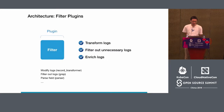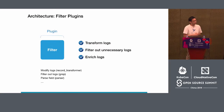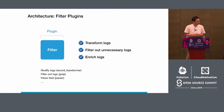Next is the filter plugin. Filter plugin is very simple — it mutates records or filters out logs. For example, you can add a hostname to the event record, or filter out unnecessary logs based on conditions like info level or error level. Filter plugins can be chained, so you can apply multiple filters to one data stream.